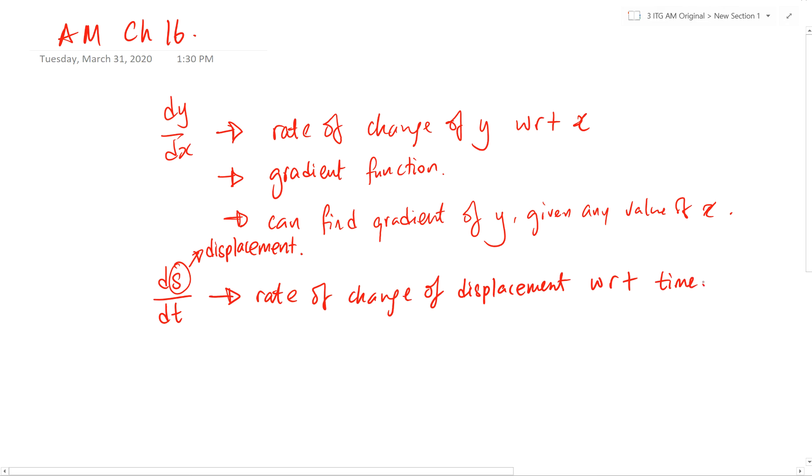Okay, so everything else is the same. So this is actually the gradient function. This also means that I can find the gradient of our st graph given any t, given any time. At any point in time, I am able to find the gradient of what? Of the displacement time graph.